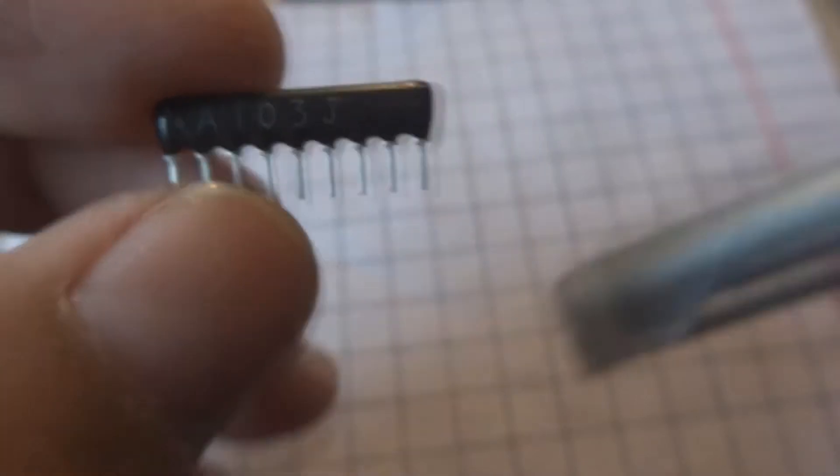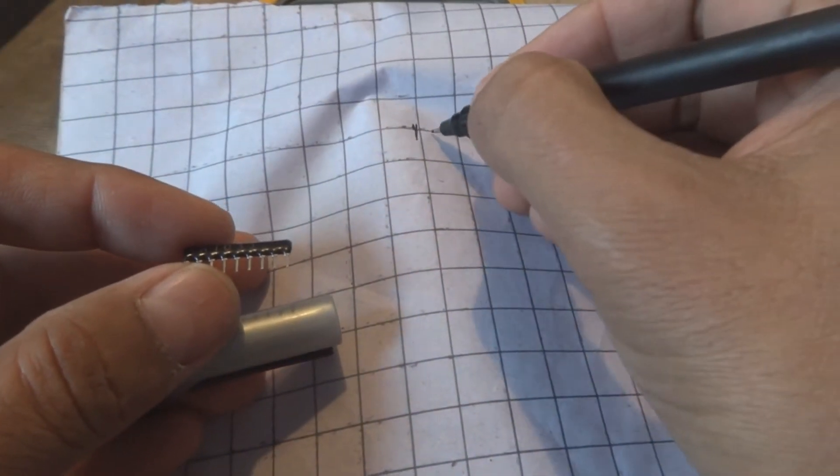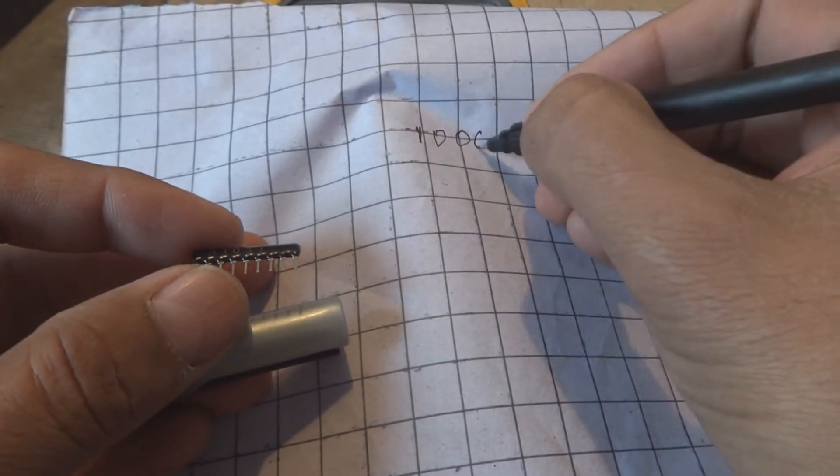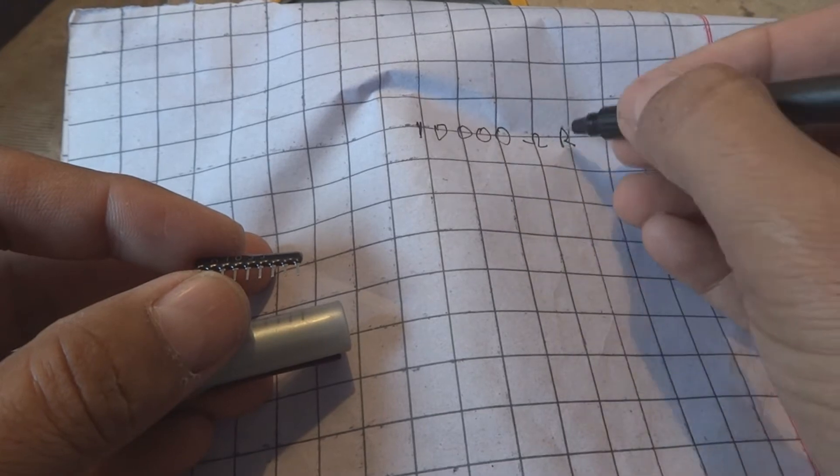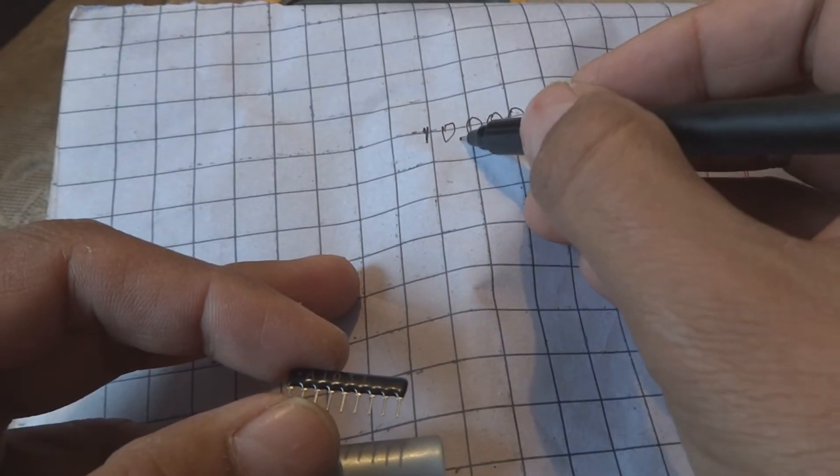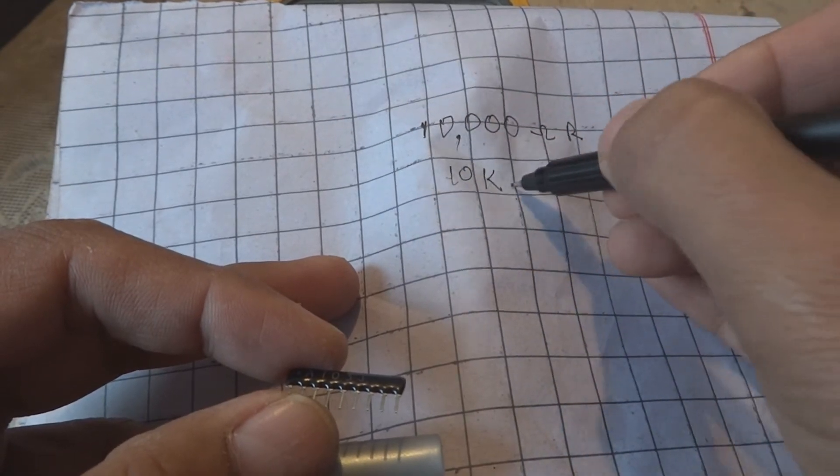103 means 1, 0, and 3 zeros. 1, 0, and then 3 zeros in ohms or resistor value. So this means 10 kilo ohm.